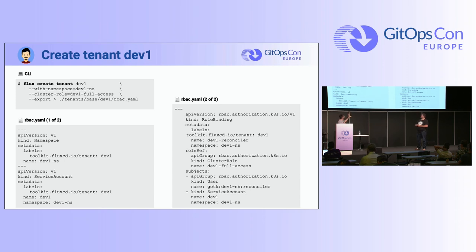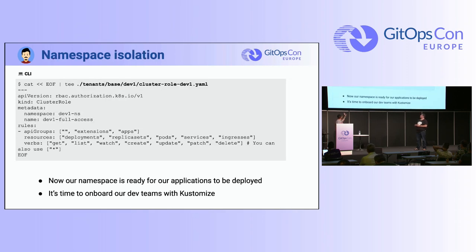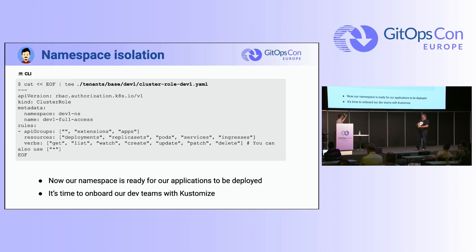The tenants.yml file also needs applications and policies added. We add a cluster role — the cluster role for dev1-ns gives full access, but you can customize it with more restricted permissions — with deployments, replica sets, list, watch, create, update, and so on. Now we have our namespace, service accounts, and cluster role ready to be deployed, and it's time to onboard the developer with Kustomize.